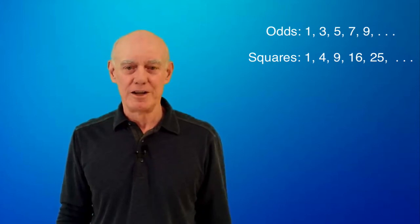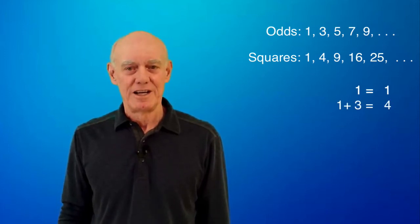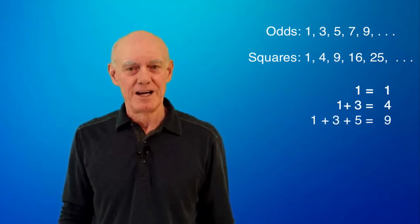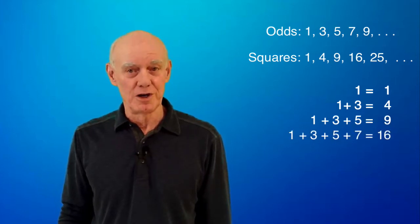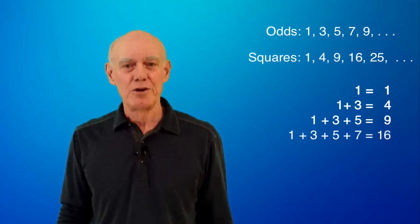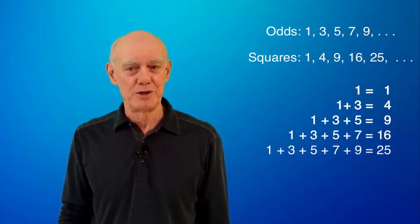Okay, here's the relationship. The first odd number and the first square are both 1. If I add the first 2 odd numbers, 1 plus 3, I get 4, the second square. If I add the first 3 odd numbers, 1 plus 3 plus 5, I get 9, the third square. Add the first 4 odd numbers, and you get the fourth square. So on and so forth. I don't even need to add the first 5 odd numbers to know that the result will be 25.